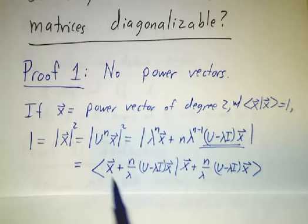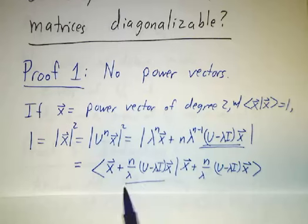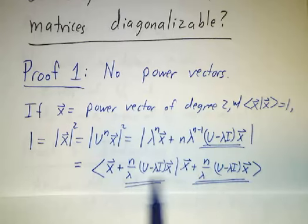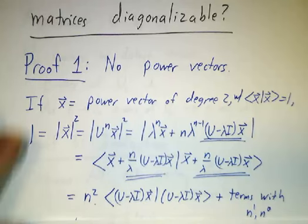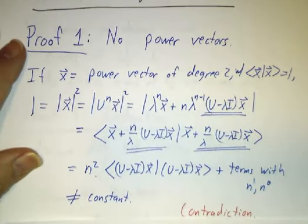But that's an inner product of this with itself. As n gets bigger and bigger, this term gets bigger and bigger. So the inner product with itself gets bigger and bigger. The inner product winds up being n squared times something non-zero plus lower order terms. In particular, it can't stay 1.